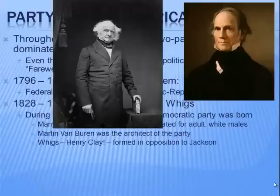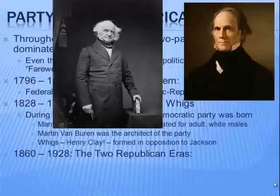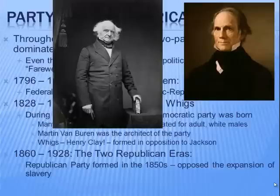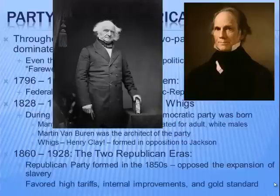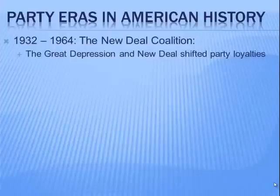From 1860 to 1928 we have the two Republican eras, where Republicans really dominated the federal government. The Republican Party formed in the 1850s, opposing the expansion of slavery as their main platform before the Civil War. After the Civil War they began to favor high tariffs, internal improvements, and the gold standard — which sounds a lot like Henry Clay's American System. From 1932 to 1964 we have what is called the New Deal coalition, as the Great Depression shifted party loyalties significantly.